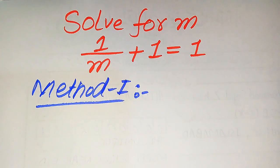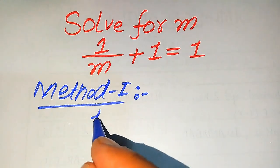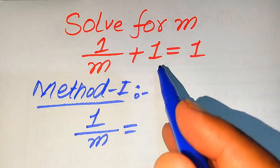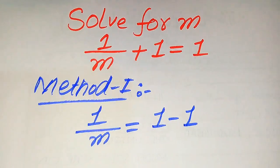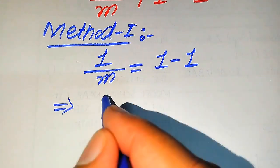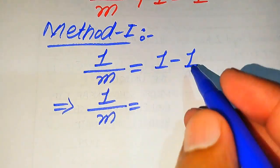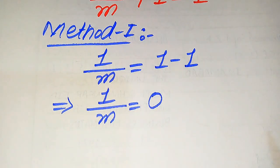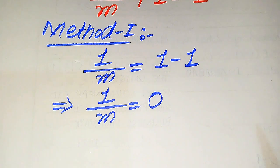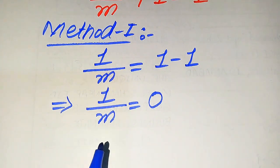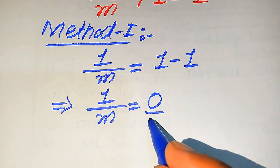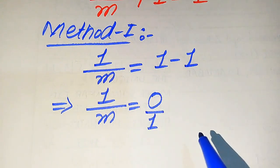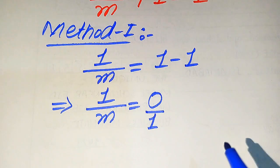In the first method, we move the plus 1 to the right-hand side, so it becomes 1 divided by m equals 1 minus 1. Since the positive 1 moves to the right-hand side it becomes minus 1, so we get 1 divided by m equals zero. To find the value of m, one way is to take the reciprocal of both sides, but the denominator on the right is 1 and taking the reciprocal gives infinity.